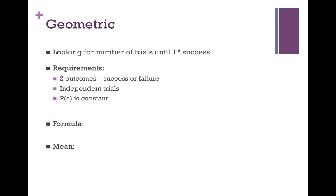Related to the binomial distribution is the geometric distribution. This distribution looks at the number of trials until you hit the first success. The requirements are the same as binomial, except there is not a fixed number of trials — you go until you hit your first success. The formula is: P(x) = (1−π)^(x−1) × π, where π is your one success and the (1−π)^(x−1) represents all the failures before it. The mean is 1/π. These two formulas must be memorized because they are not on the AP test. There is a geometpdf and geometcdf on your calculator; they work the same as binomial except you don't input n — just π and x.